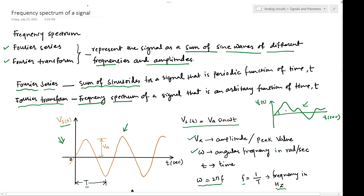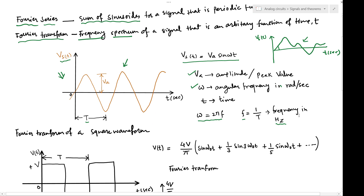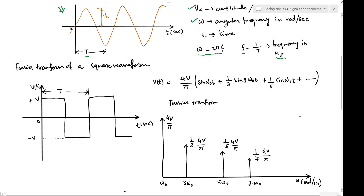To see how to apply the Fourier transform, consider a square wave with amplitude +V volts and −V volts, alternating with respect to time, with a time period indicated by capital P. The Fourier transform of this waveform is given by: v(t) = (4V/π) · [sin(ω₀t) + (1/3)sin(3ω₀t) + ...